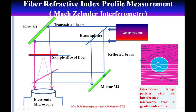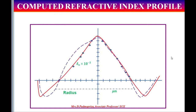The interference fringe pattern can be observed through the microscope. Any fringe displacement is called q; it occurs due to the variation in density of the core material. The refractive index difference is given by the expression: delta_n = q * lambda / x, where q is the fringe shift, lambda is the incident optical wavelength, x is the thickness of the fiber slab, and delta_n is the refractive index difference. A graph is plotted with the core radius along the x-axis and delta_n along the y-axis. The values of delta_n can be obtained from this graph.